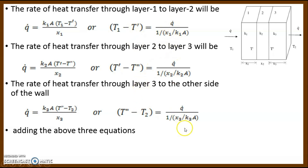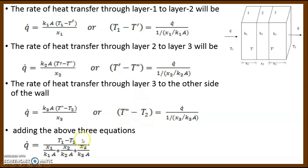Adding all three equations, the intermediate temperatures T' and T'' cancel out, giving T1 minus T2 — the overall temperature difference across all three layers. The rate of heat transfer Q-dot is constant through all layers. The denominator gives the thermal resistances: X1/(A·K1) for layer 1, X2/(K2·A) for layer 2, and X3/(K3·A) for layer 3.